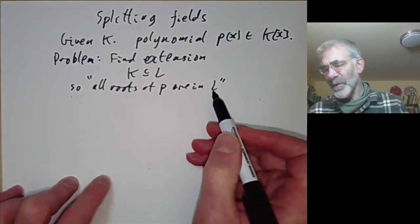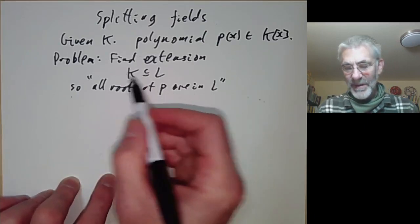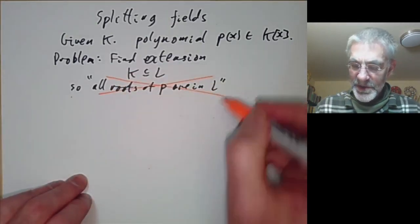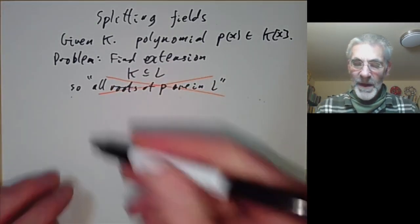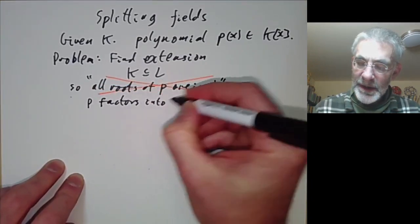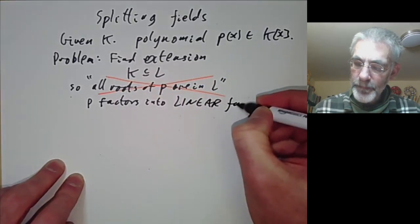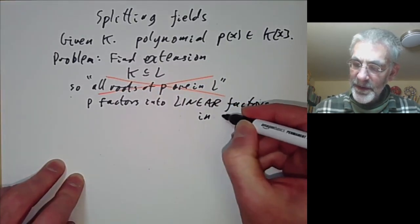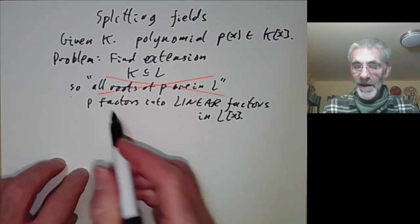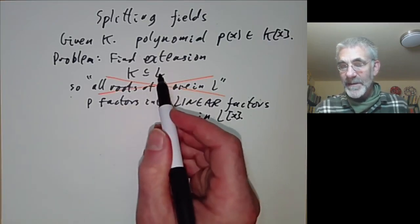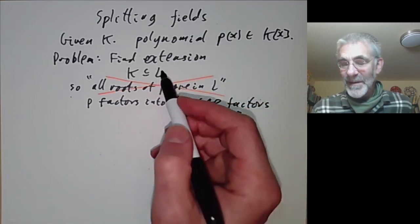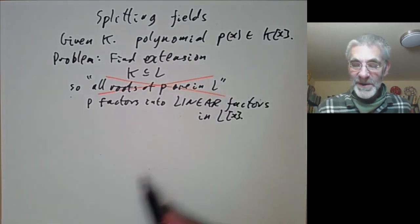Saying all roots of p are in L doesn't quite mean anything yet, because what is a root of p? So we shouldn't really say that. What we should say more precisely is that p factors into linear factors in the ring L[x]. In other words, L contains all roots — or at least L contains n roots of p, where p has degree n.